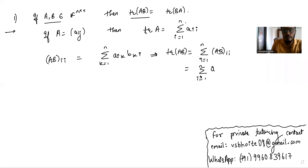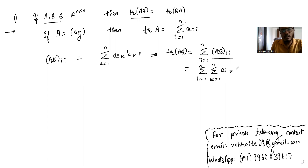Substituting for (AB)_{ii}, we get trace(AB) equals summation i from one to n of summation k from one to n of a_{ik} b_{ki}.